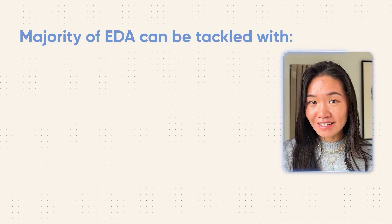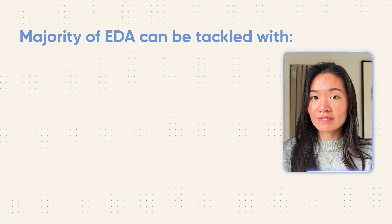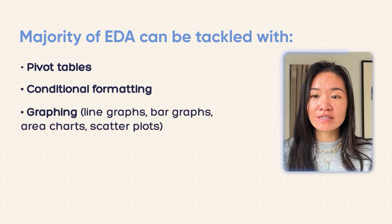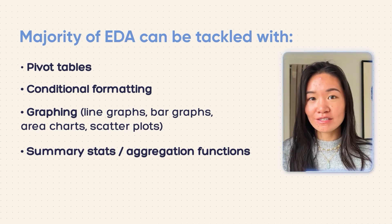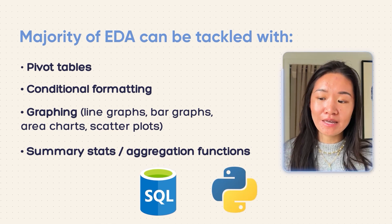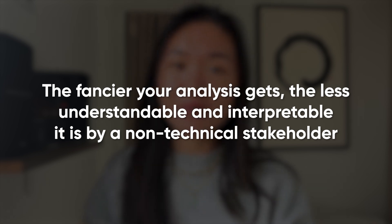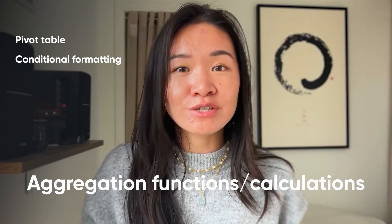About 70% of exploratory analysis, at least the first year on the job, can be tackled by pivot tables, conditional formatting, graphing — line graphs, bar graphs, area charts, scatter plots — and summary stats and aggregation functions. You can get fancier with SQL and Python, but remember that in the beginning, the fancier you get, the less understandable and interpretable your output will be for a non-technical stakeholder. There are really just three technical concepts I used here: the pivot table, the conditional formatting, and the aggregation functions for summary stats and growth rates. It's the thought process of translating the big question down to smaller questions that really directed my approach.